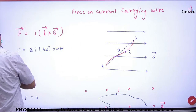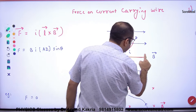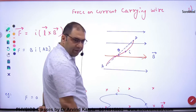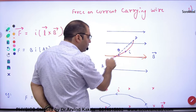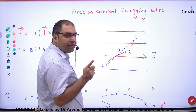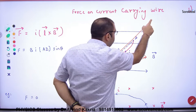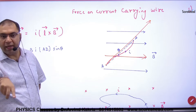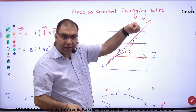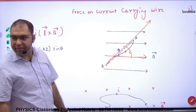So in this question, you have a magnetic field and a current-carrying wire. What you do is join points A and D. You take the displacement AD. The current flows from A to D, so you take displacement vector AD. The force is then B·I·L·sinθ, where the displacement AD is the shortest distance.